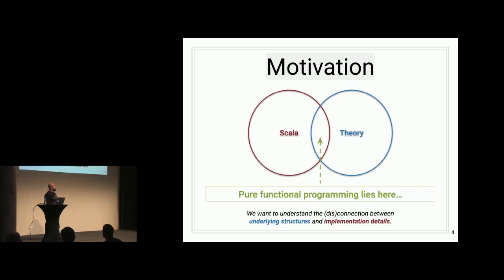So the motivation for the talk is really the center of this Venn diagram, right? So we have Scala and its vast array of language features. And then on the other side, we have mathematics, theoretical computer science, type theory, all this other stuff. And category theory, which is the thing that we're going to look at today in terms of theory. So pure functional programming lies in the middle of some of Scala's language features and category theory. And so we want to understand the disconnections and connections between the underlying structures and some of the implementation details.